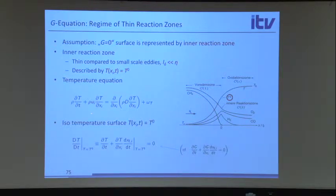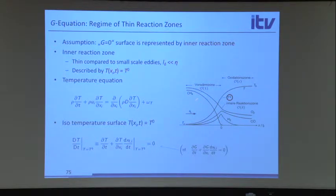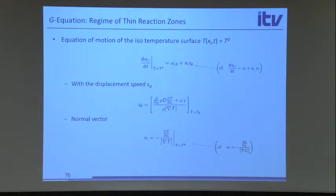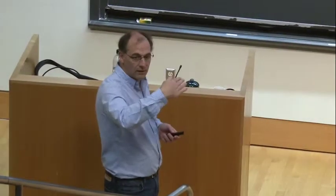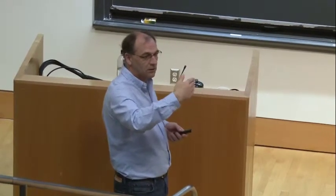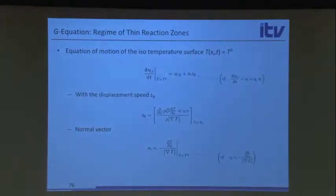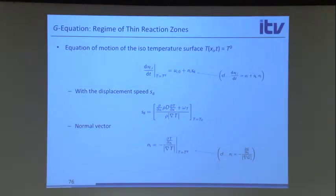To do that, we start out with the temperature equation and write the substantial derivative of temperature at a point moving with this isosurface—which must equal zero. The term dx_f/dt is again associated with a displacement speed of that front. It turns out that if you look at a diffusive scalar and have a certain profile, you can analytically get an expression for the displacement of that front by diffusion and reaction.